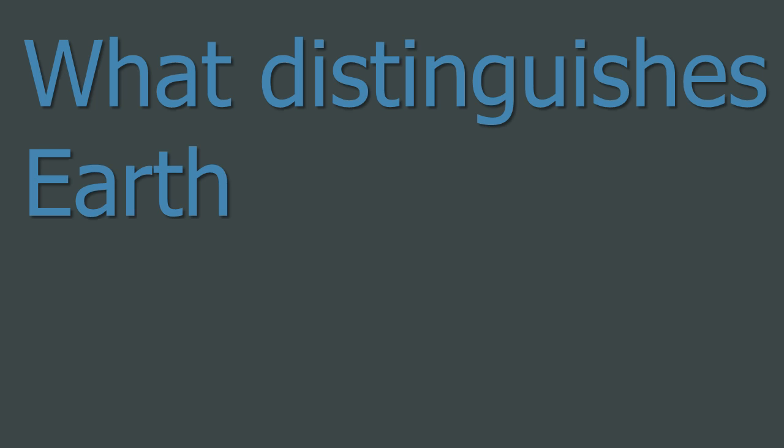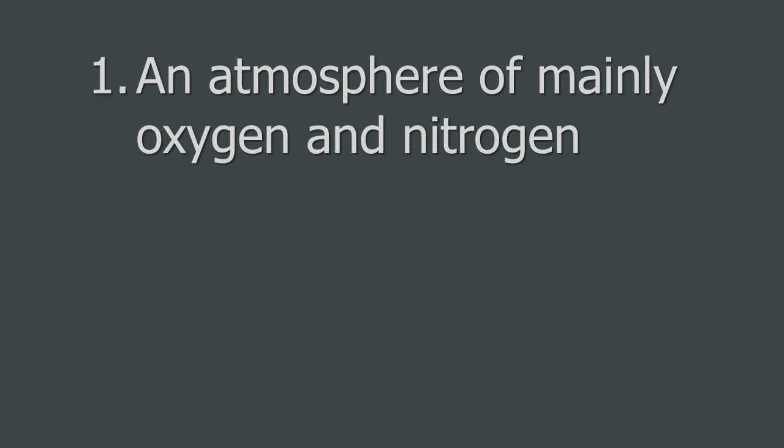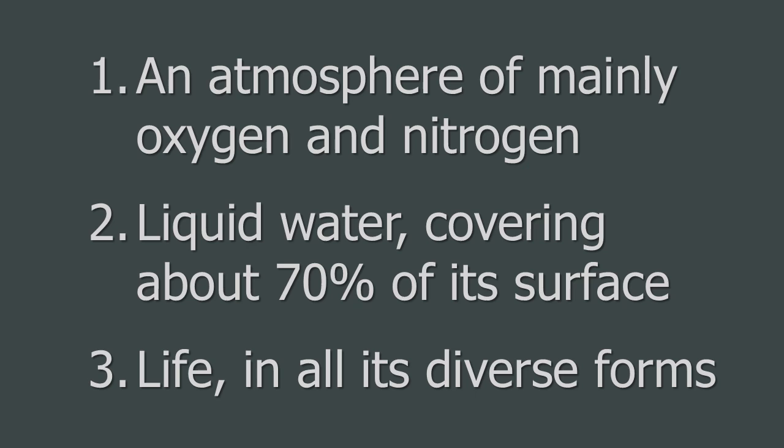What distinguishes Earth from other planets? Earth has an atmosphere of mainly oxygen and nitrogen. Some planets have no atmosphere, other planets have atmospheres with different compositions. Earth also has liquid water covering about 70% of its surface. Earth also has life in all its diverse forms. Earth is the only planet we know that definitely has life on it.